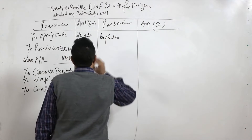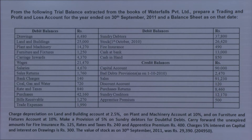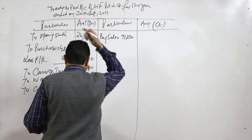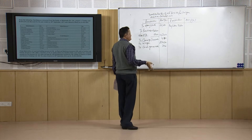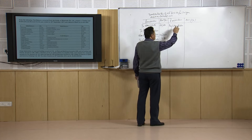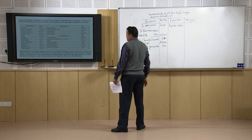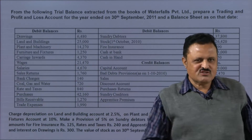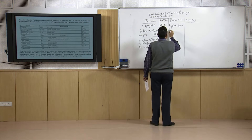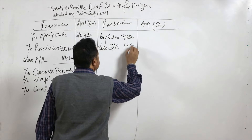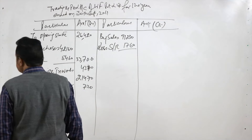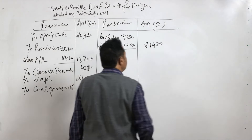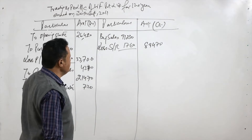On the credit side, the first income is from sales. The sales figure from the trial balance is 91,230 rupees. However, buyers have returned some goods, so we subtract sales returns of 1,760 rupees, giving a net sales figure of 89,470 rupees in the outer column as the final sales amount.